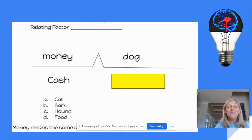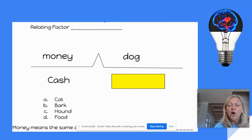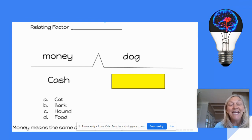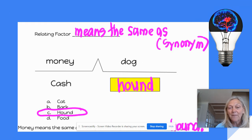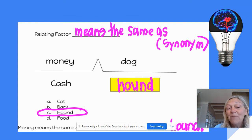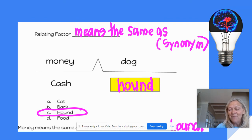Now let's do another one. Money is to cash as dog is to blank. Think about the relating factor between the first two. Yes — money is the same as cash. The relating factor is 'means the same as,' or synonym. So money is to cash as dog is to hound. They both mean the same thing.